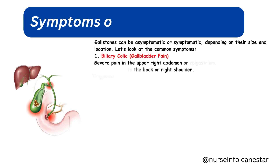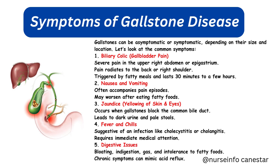Gallstones can be asymptomatic or symptomatic depending on their size and location. The first major symptom is biliary colic — severe pain in the upper right abdomen or epigastrium that radiates to the back or right shoulder. It is triggered by fatty meals and lasts 30 minutes to a few hours. Nausea and vomiting often accompany pain episodes and may worsen after eating fatty foods.